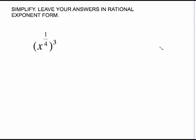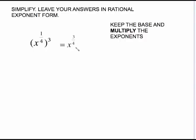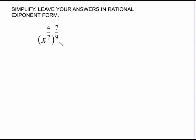Here's the other exponent law: keep the base and multiply the exponents, because this is raising a power to a power. So 3 times 1/4 gives us 3/4 and we're finished — no common denominator needed because we're multiplying. In another example, the 7s cancel out and we get x to the 4/9.